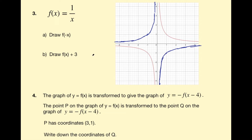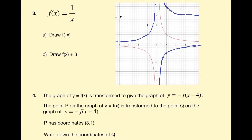Now I need to draw f of x plus 3. That's a vertical translation in the positive y direction by 3 units. So the point (1, 1) goes up to (1, 4) — we've added 3 to the y coordinate. The asymptote now sits at y equals 3 rather than 0, approaching 3 but never touching it. The point (-1, -1) translates up to (-1, 2). The y-axis is still an asymptote.